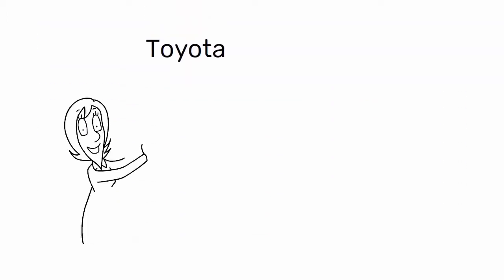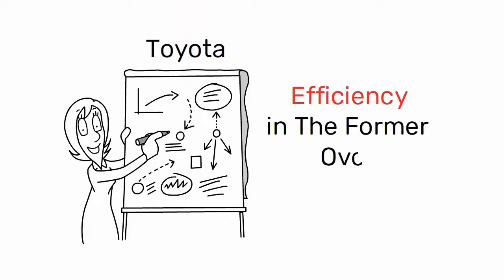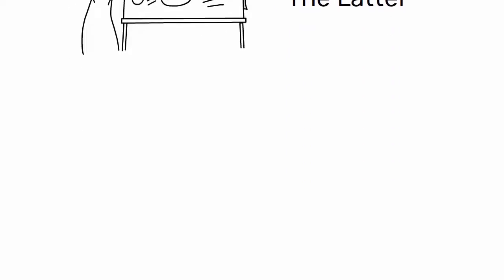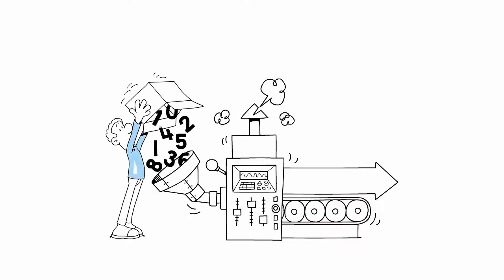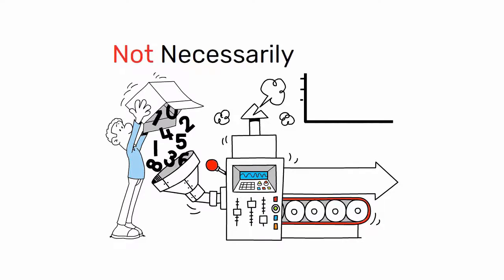Toyota, for example, emphasizes achieving efficiency in the former over the latter. This is because optimizing individual steps or processes might not necessarily result in an overall improvement in the system.